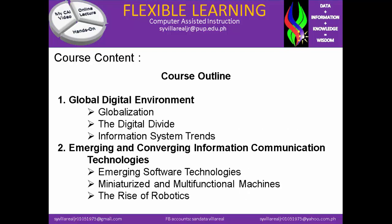Here we have the course content — the topics needed to be finished this semester. On the course outline: first, the global digital environment, which talks about globalization; number two, the digital divide; number three, information system trends. Next topic is emerging and converging information communication technologies, segregated by: emerging software technologies, miniaturized and multifunctional machines, and the rise of robots.